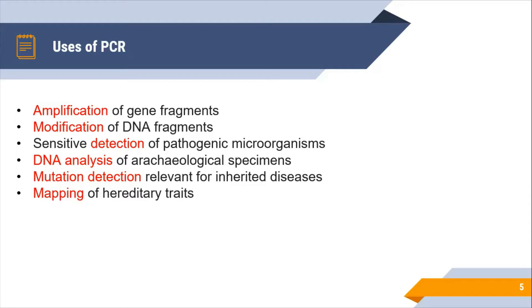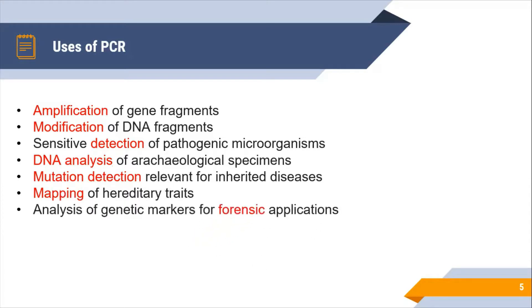The next use is analysis of genetic markers for forensic applications. Forensics is a very important branch in which paternity testing and criminal investigations are conducted. In forensic applications, we use PCR to create genetic markers, run PCR reactions, and detect information relevant to paternity testing or criminal cases. PCR is a very useful technique for forensic applications.